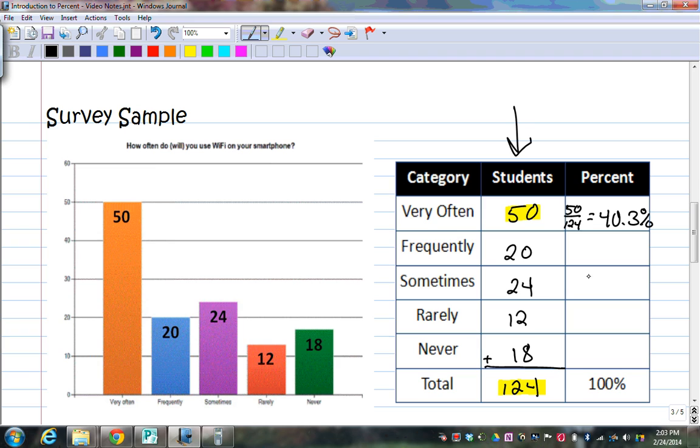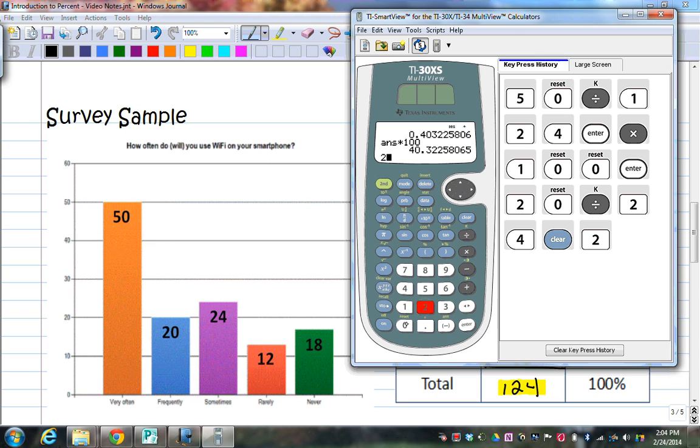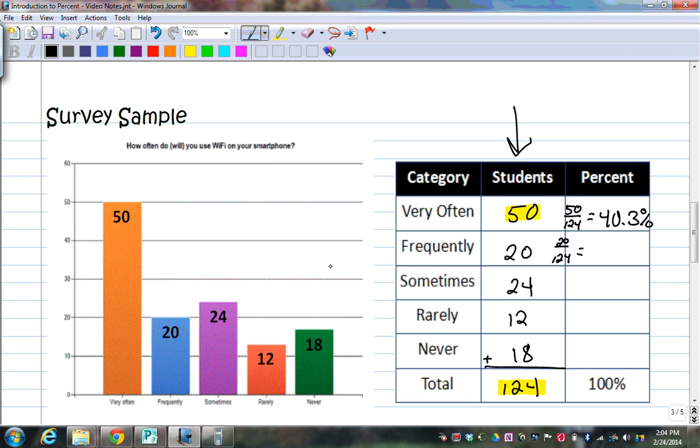And I'm going to do that for each one of these. So this one then would be 20 out of 124. When I divide that one out, I would get, I believe that's 16. Let me check this. So I have 20 divided by 124. That's 16.1%. Then I have a 24 out of 124. This one is going to be a 19.4%. And then I have a 12 out of 124, which is 9.7%. And then the last one is an 18 out of 124. And this is 14.5%.